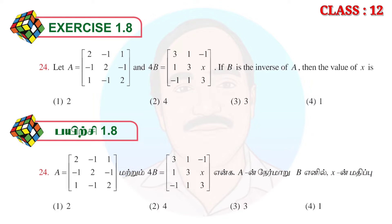Let A equal to the matrix: 2, -1, 1, -1, 2, -1, 1, -1, 2. And 4B is equal to the matrix: 3, 1, -1, 1, 3x, -1, 1, 3. If B is the inverse of A, then find the value of X.